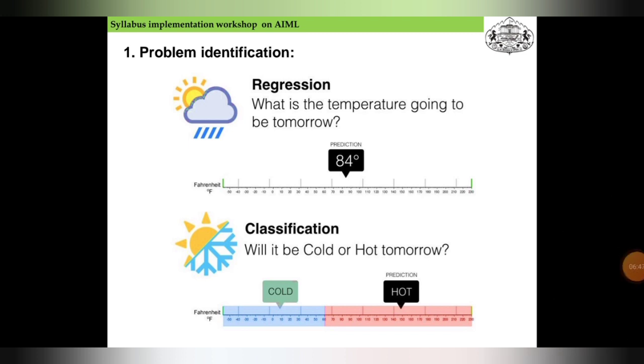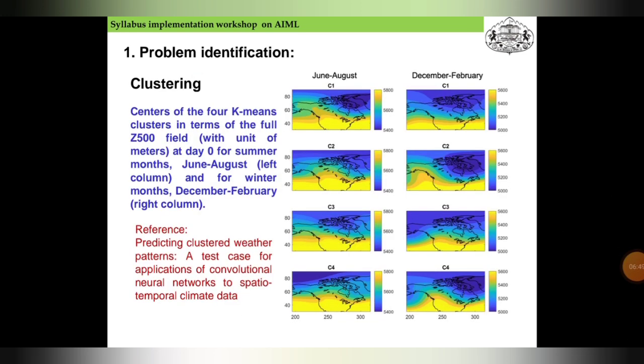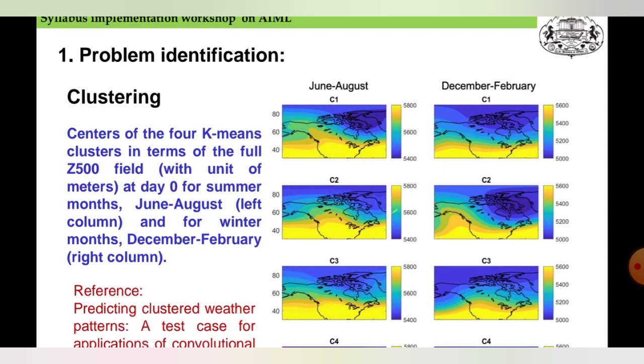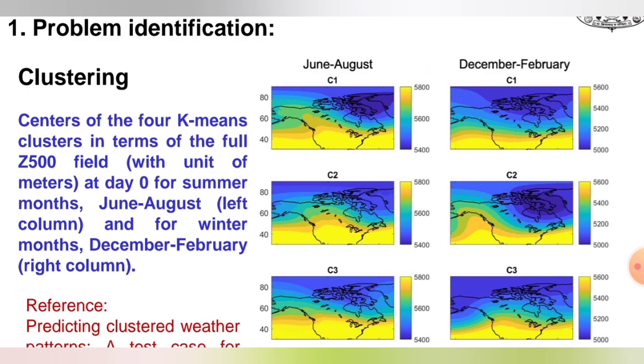In the upcoming slides we have clustering - K-means clustering in terms of the Z500 field with units of meters for zero day summer months June to August and for winter months December to February.